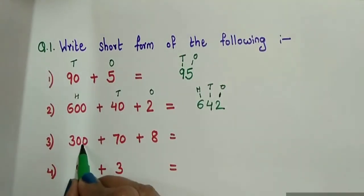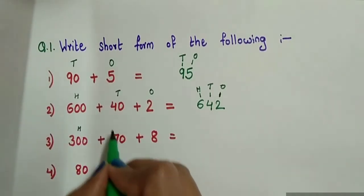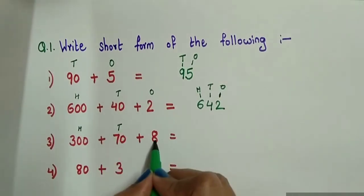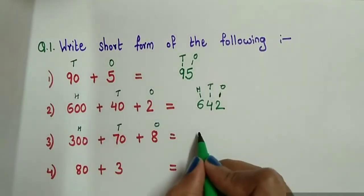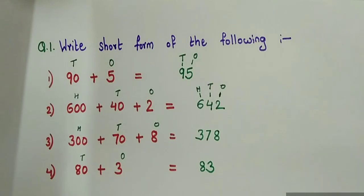Similarly we can solve next question. This 3 is at 100's place, 7 is at 10's place, and 8 is at 1's place, so the answer will come 378. So short form is also very easy to solve.